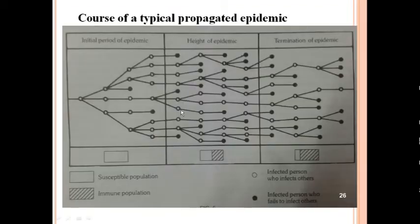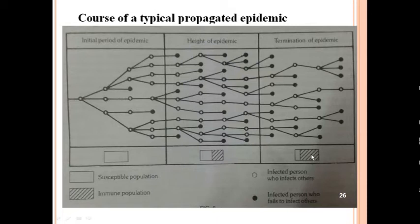The diagram from the textbook shows the course of a typical propagated epidemic. Initially there is only a susceptible population. Gradually, at the height of the epidemic, partial immunity is present in the community due to natural infection — people become immune. When the immune population increases, there is termination of the epidemic. Termination happens when the number of immune people increases or there is lesser mobility. Both strategies have been tried in this pandemic.